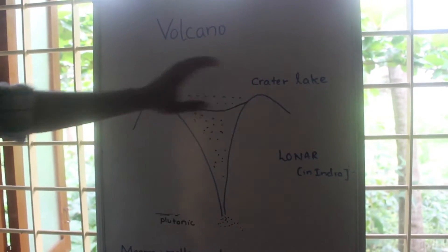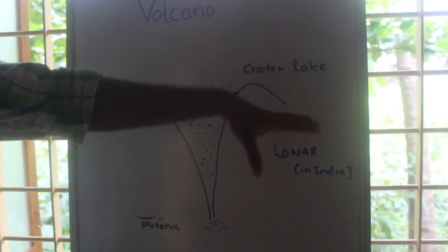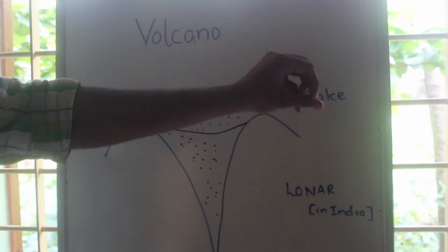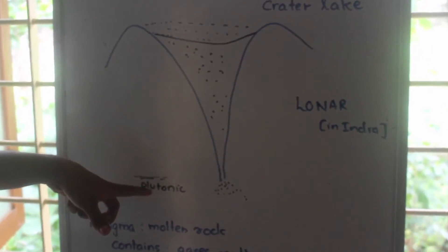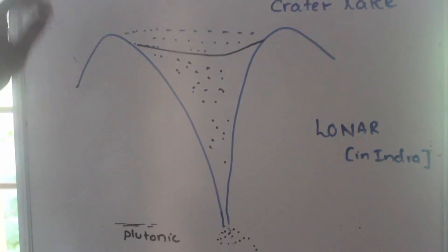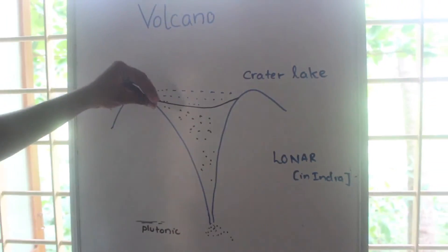The magma coming out will flow through the sides and undergo solidification to give intrusive rocks. Magma inside will undergo solidification to give plutonic rocks.